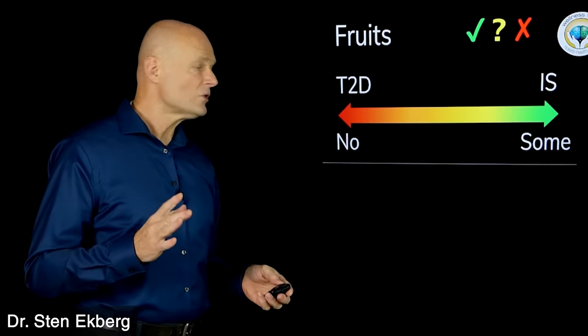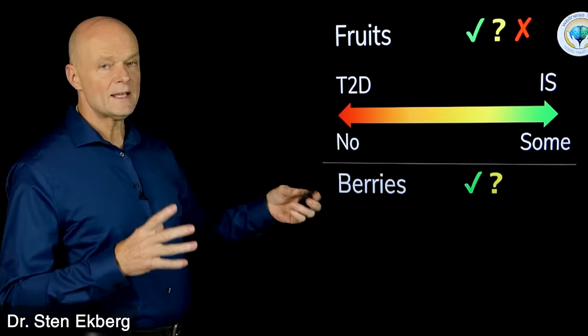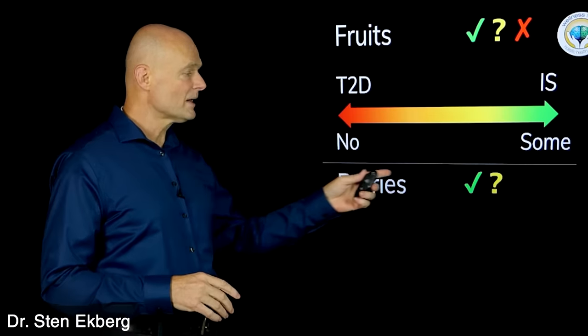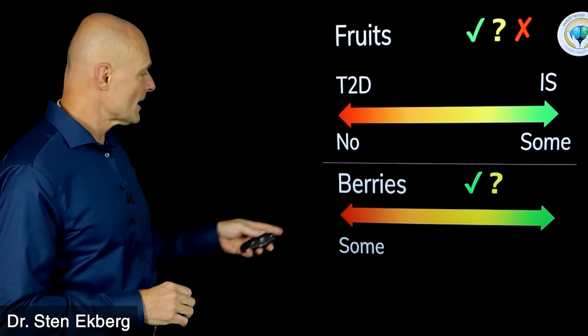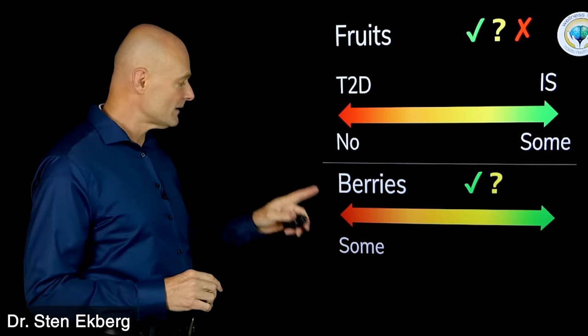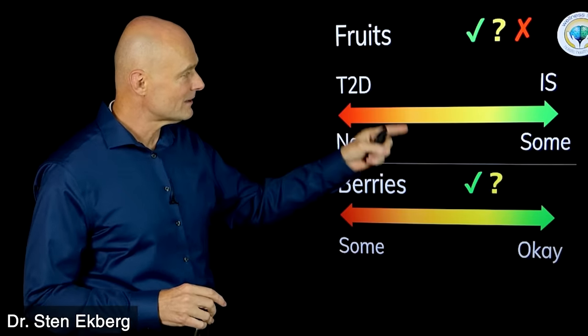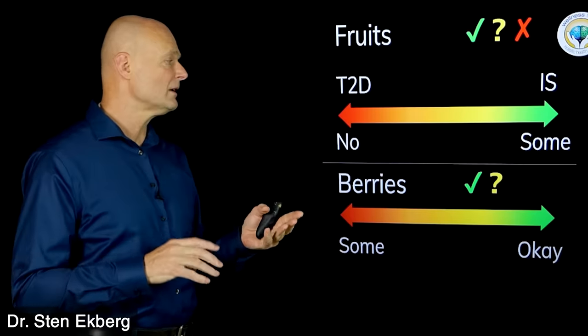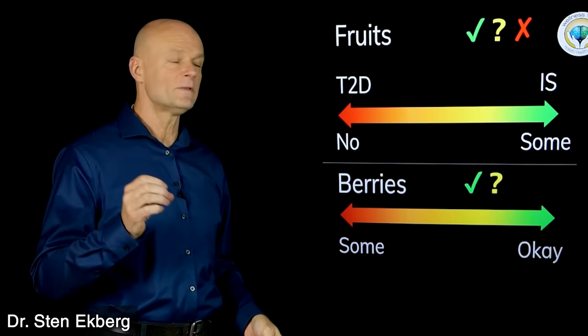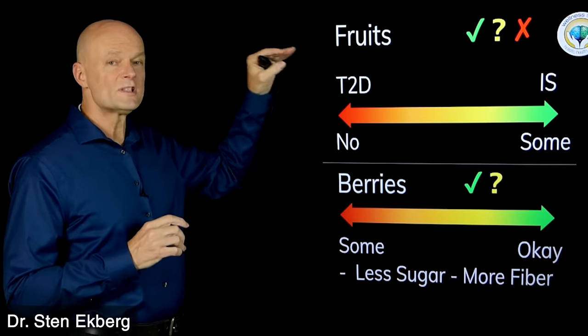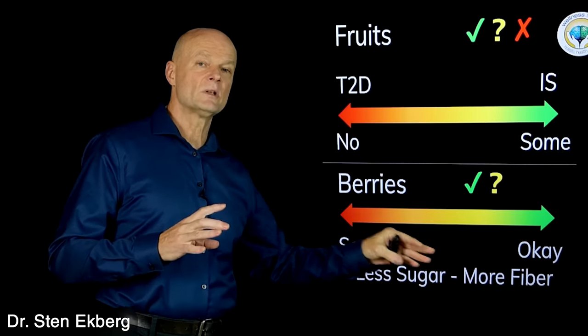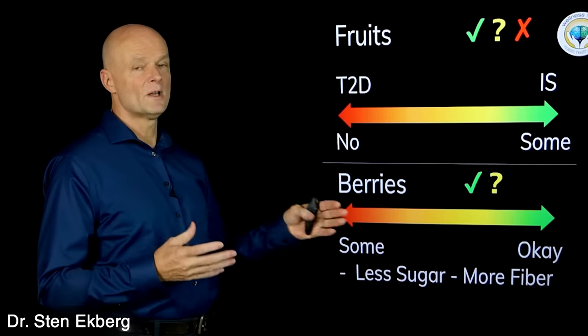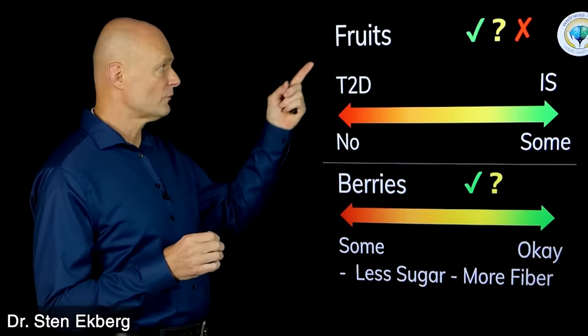We also have to understand that berries, even though they're typically lumped together in the same category, I think berries are quite different and much more difficult to overeat. I think even as a type 2 diabetic you can have some berries, and if you're insulin sensitive you're okay to eat almost unlimited berries. Compared to most sweet fleshy fruit, berries have much less sugar and more fiber. You could probably eat three to four times more berries than fruit and get the same blood sugar impact.